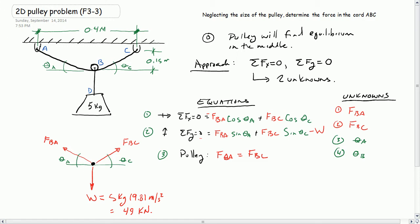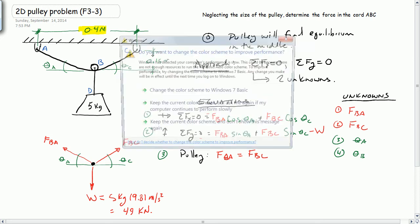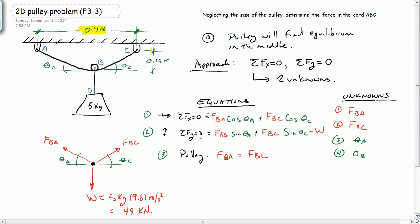So a lot of times when we don't have enough equations, we start to look at the geometry. You'll notice I haven't used the 0.4 meters yet. So we have this distance and we have the 0.15 meters. And we haven't used either of those yet. And so let's see if we can come up with something from geometry.